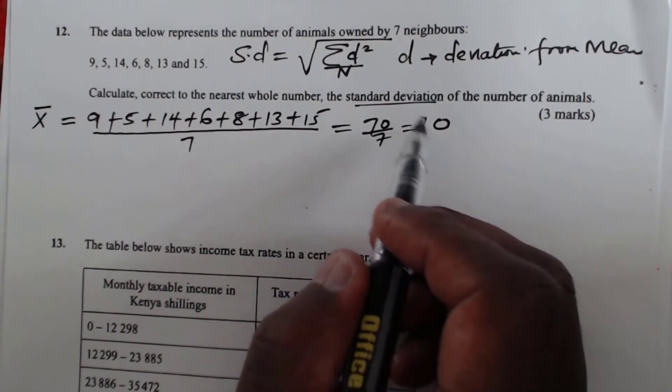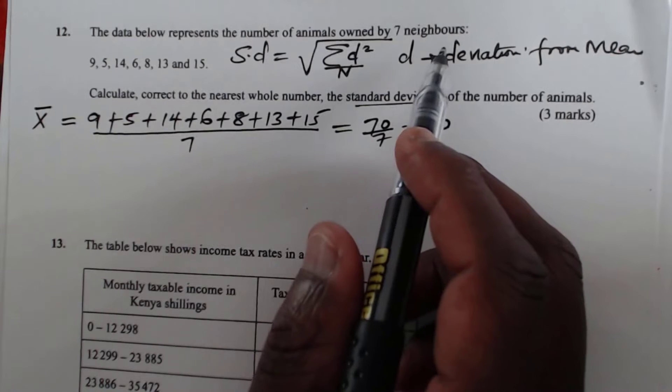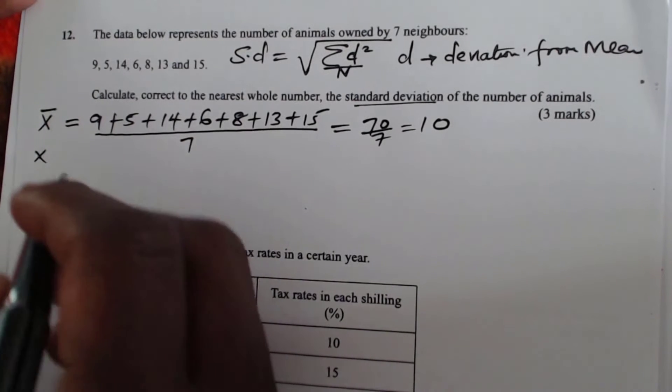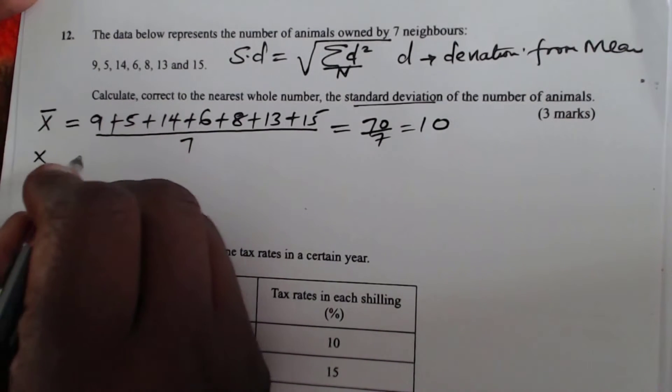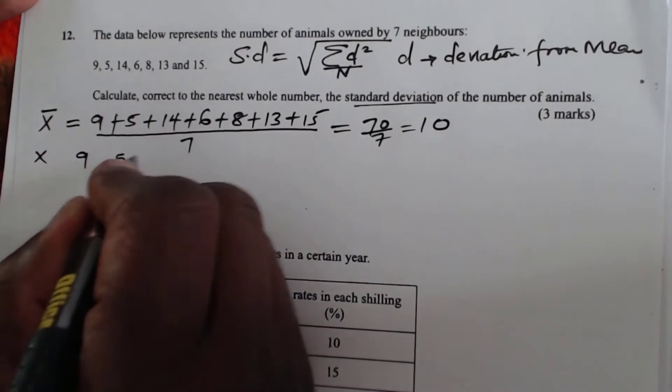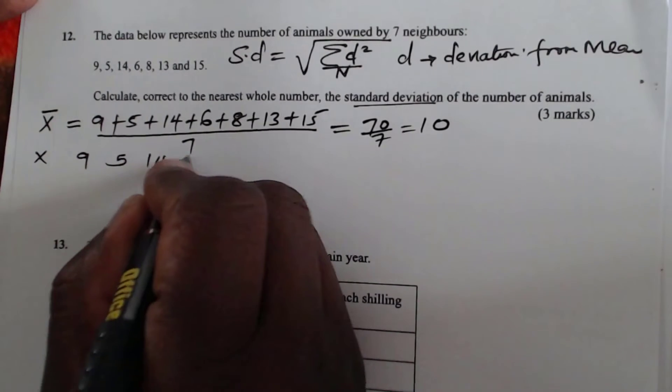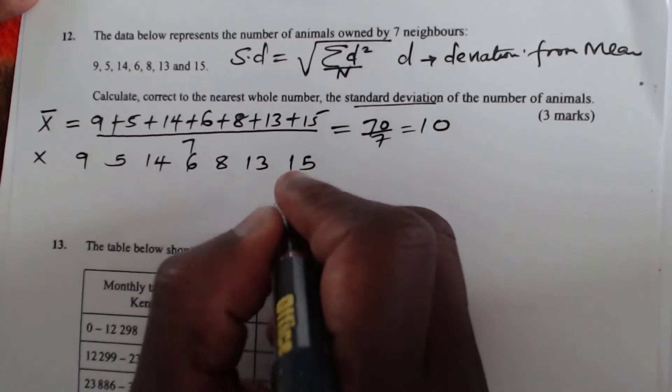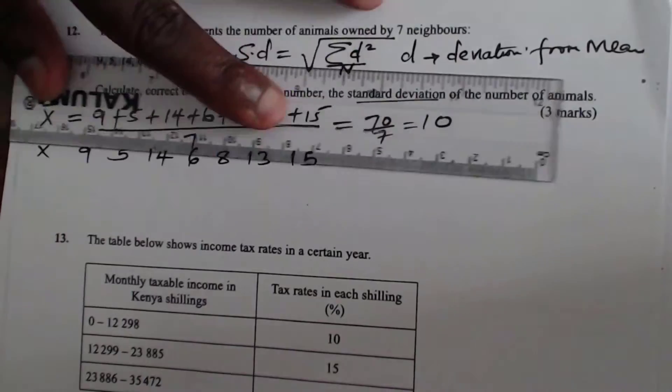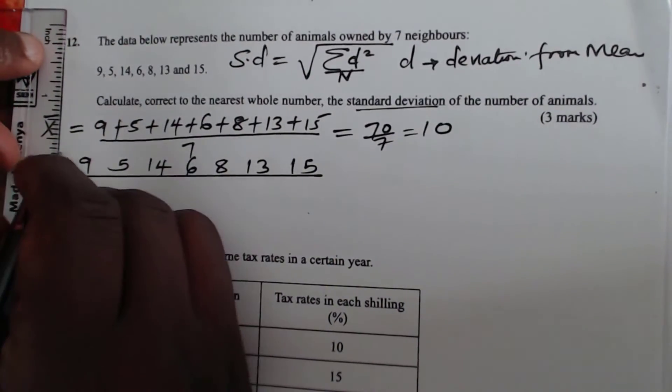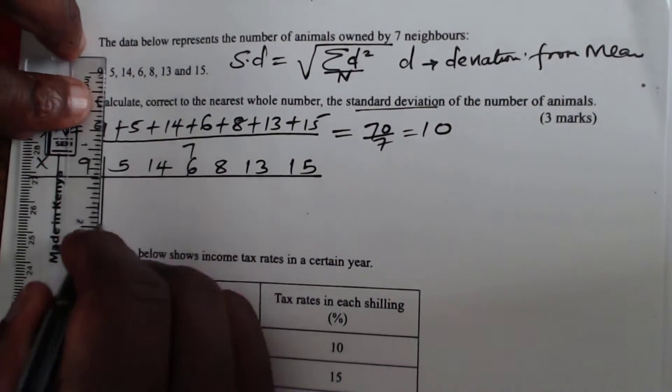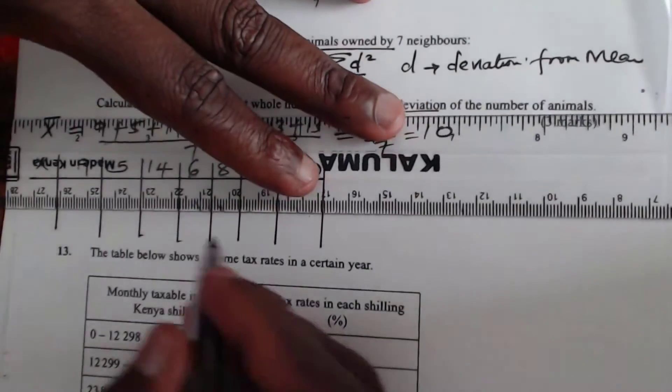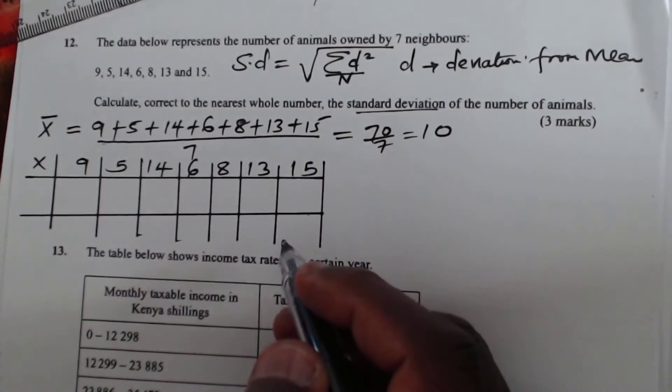Now after getting the mean, this will help you now to get the deviation from the mean. I will prepare our table here, a simple table. So X, here list these X. This is 9, this is 5, 14, 6, 8, 13, and 15. So this is X.